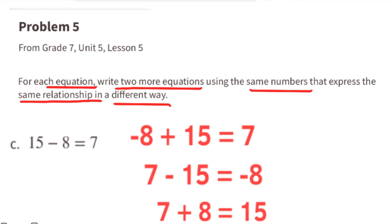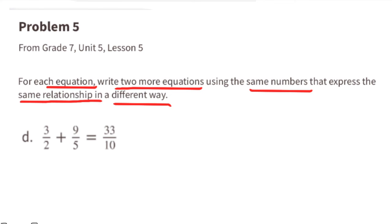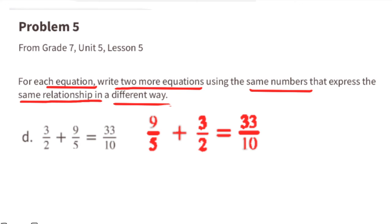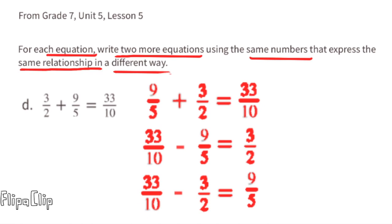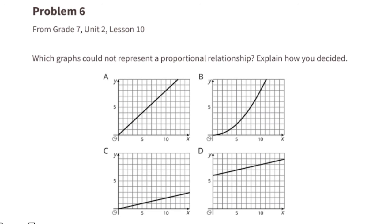Part d: 3.5 plus 9.5 equals 33.5 (the order doesn't matter for addition). Additional equations: 9.5 plus 3.5 equals 33.5, 33.5 minus 9.5 equals 3.5, and 33.5 minus 3.5 equals 9.5.